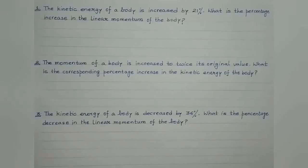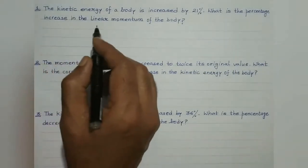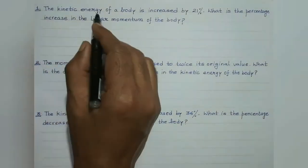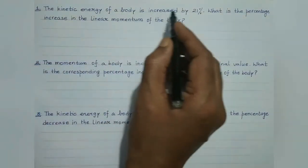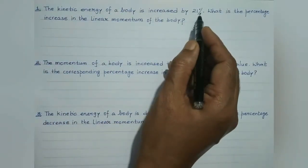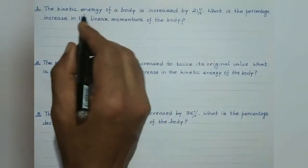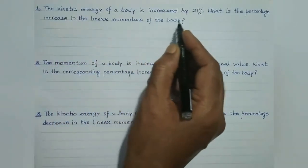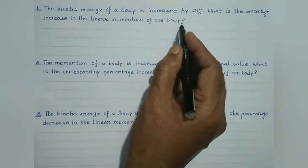Let us attempt three numericals based on the relationship between kinetic energy and momentum. First question: the kinetic energy of a body is increased by 21%. What is the percentage increase in the linear momentum of the body?